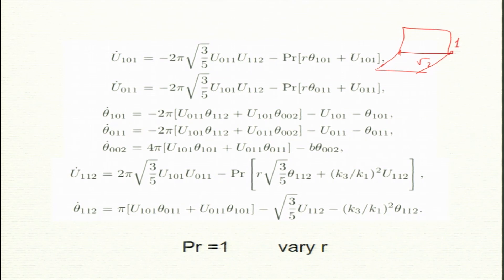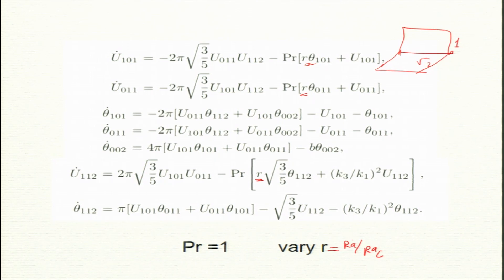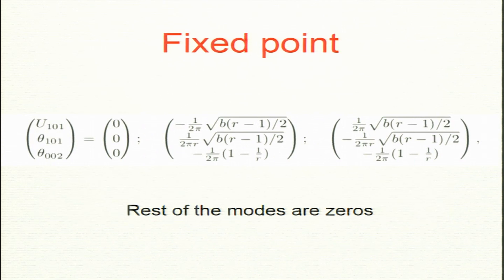To study the behavior of this model we set Prandtl number to 1 and vary small r, where small r = Ra/Ra_critical. Before r=1, the stable solution is all zeros — no convection, only conduction. As soon as r becomes greater than 1 we get non-trivial solutions.